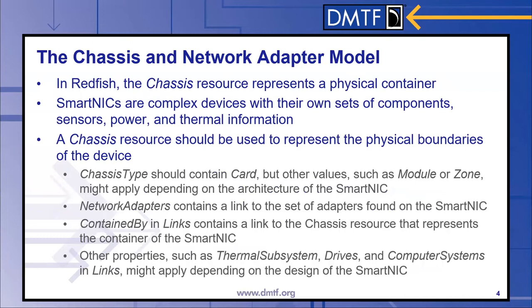In Redfish, we model the physical view of what's in your data center using the chassis resource. Chassis is not just a piece of sheet metal in a rack — it's really more of a physical container, and you can have nesting of containers within the chassis model. SmartNICs are very complex devices with their own sets of components, sensors, power, and thermal information. The best way to model a SmartNIC is to use the chassis resource to show the physical boundary of the SmartNIC itself. Within chassis, there's the chassis-type property, which should contain the value "card," though other values like "zone" or "module" might apply depending on the architecture.